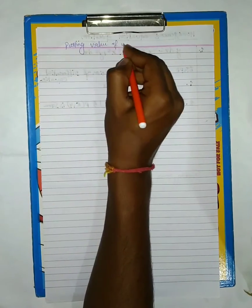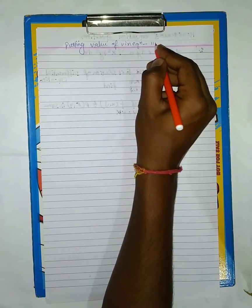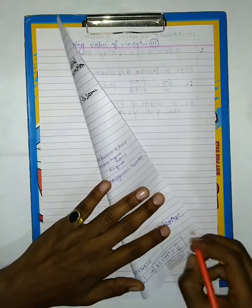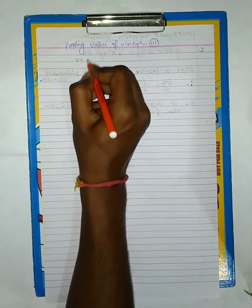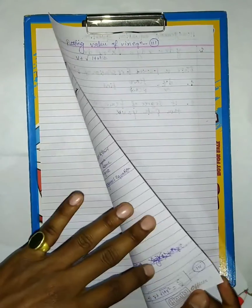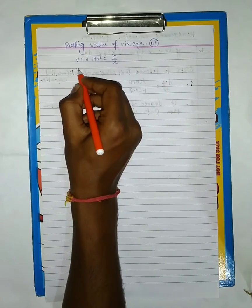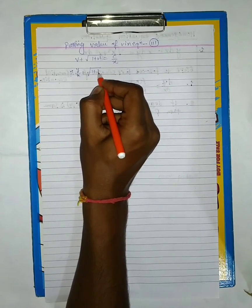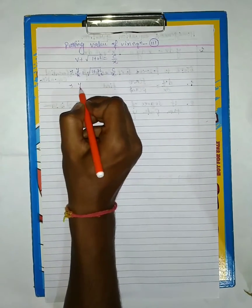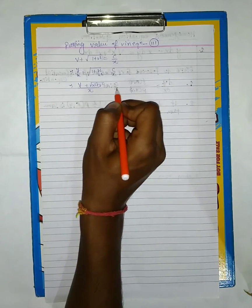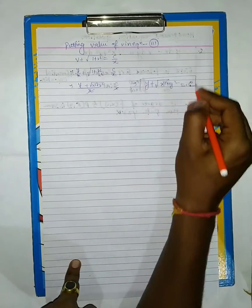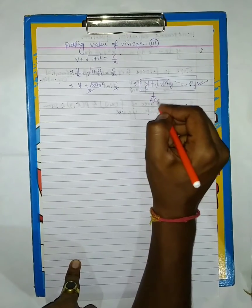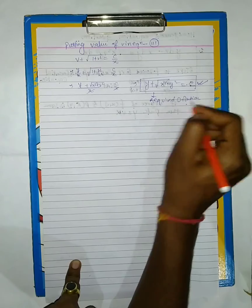Therefore the resulting equation simplifies to x dv/dx equals the expression obtained after cancellation.